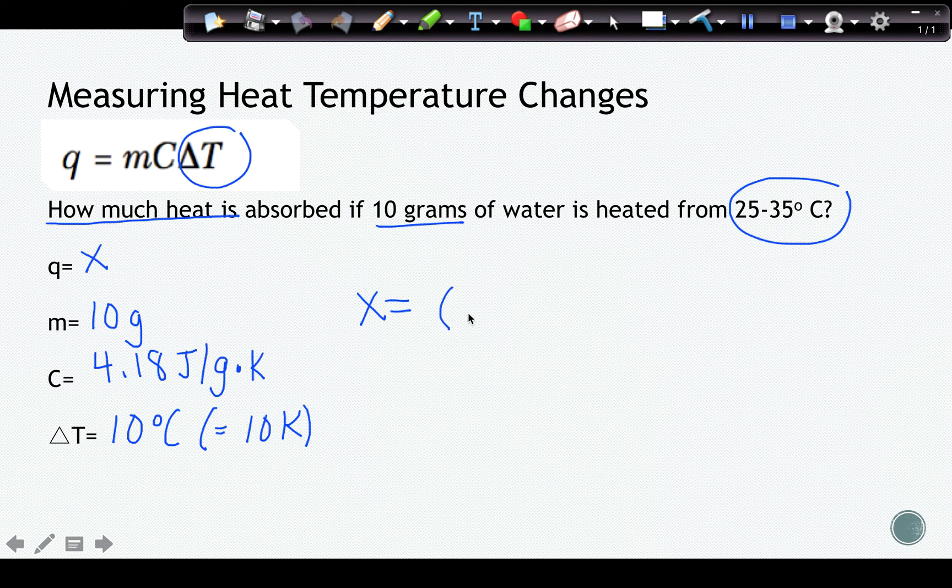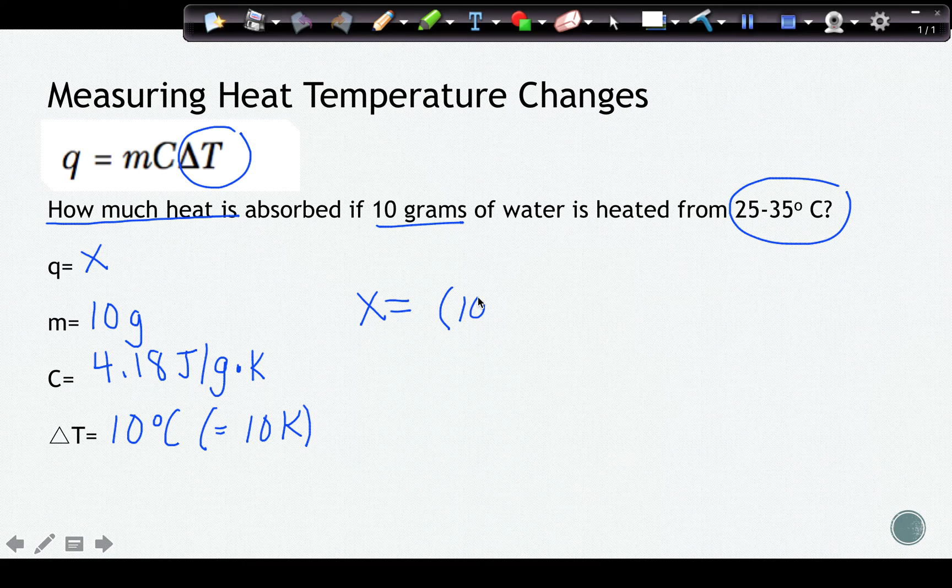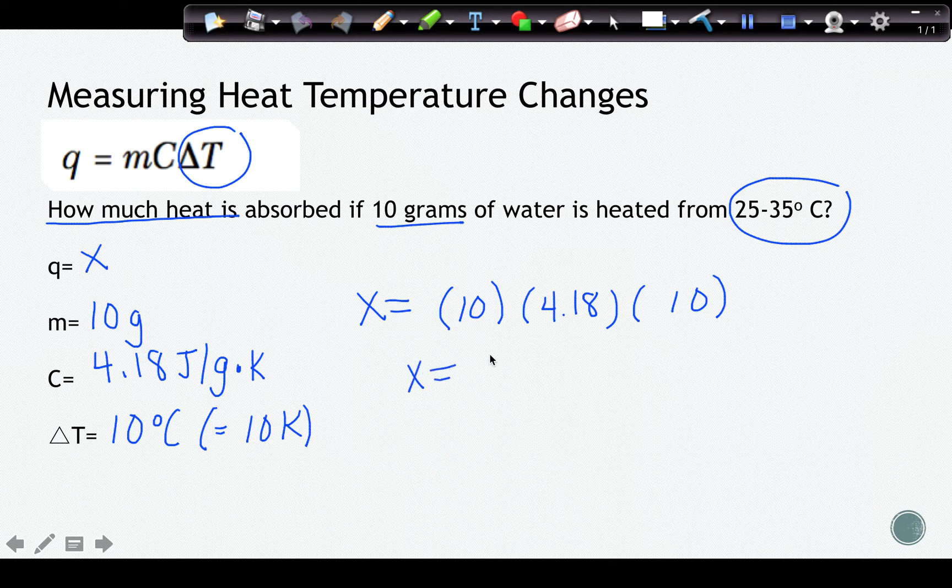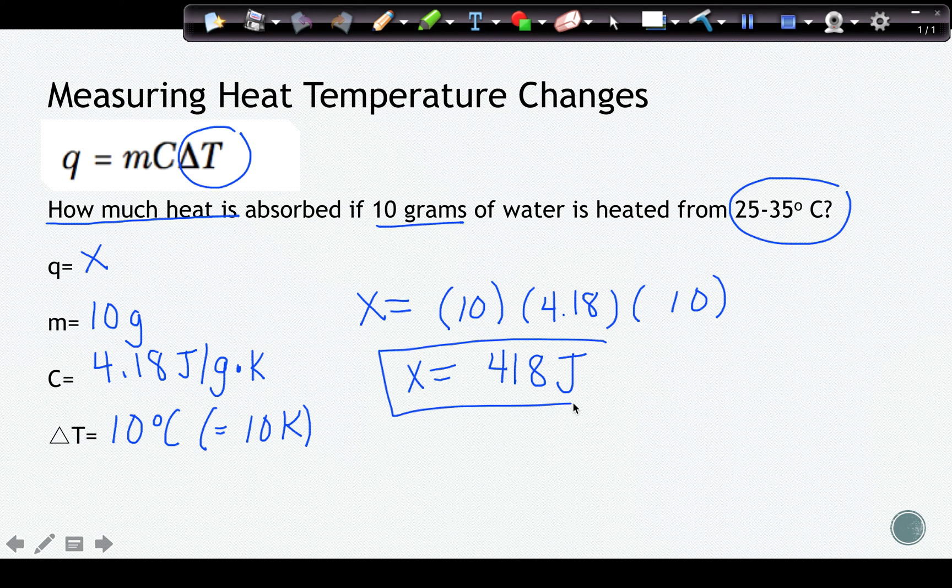So I fill in my information. I plug it into the formula. X equals 10 times 4.18 times 10. And when I multiply it all out, I get that X equals 418 joules. That would be the answer for this question. Joules is my measure of heat. And when I do my math, this is what I come out with.